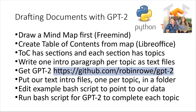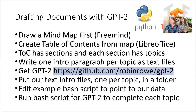Here's how we do GPT-2. We draw a mind map first using FreeMind, which is an open source program for doing mind maps — there are a dozen different programs available. We create a table of contents from the map in LibreOffice. The table of contents has sections, and each section has topics. We write one intro paragraph per topic as text files. Then get my fork of GPT-2 — not just any GPT-2 — because I'm maintaining it. The version OpenAI posted has been abandoned since they moved to GPT-3.